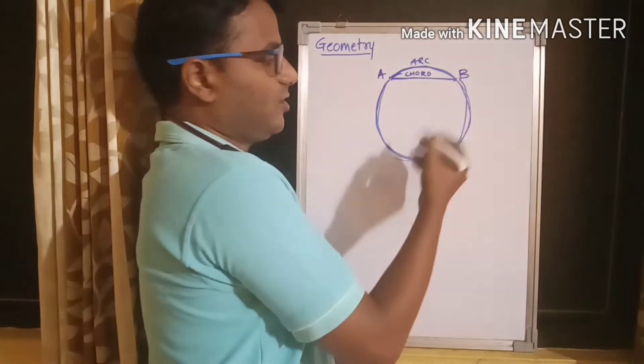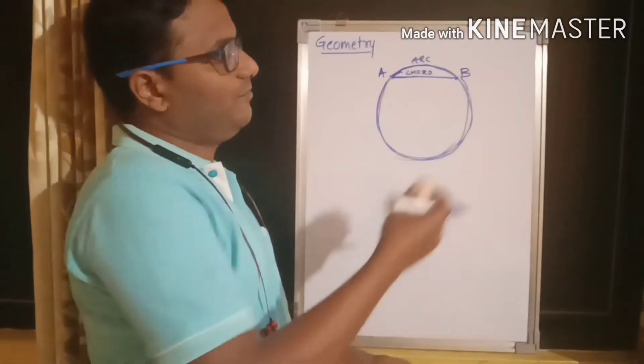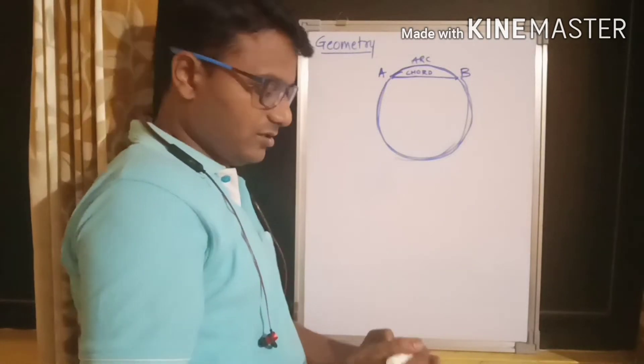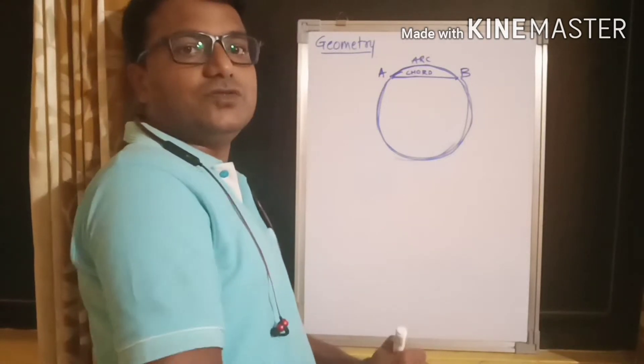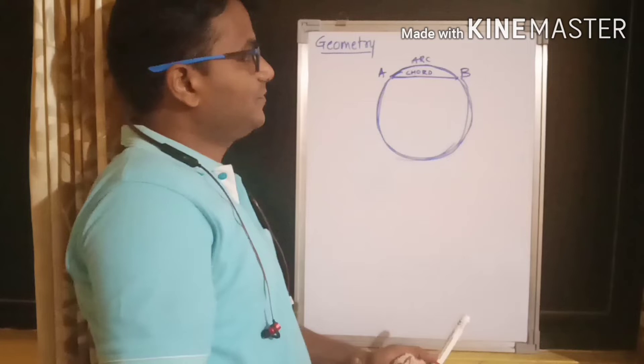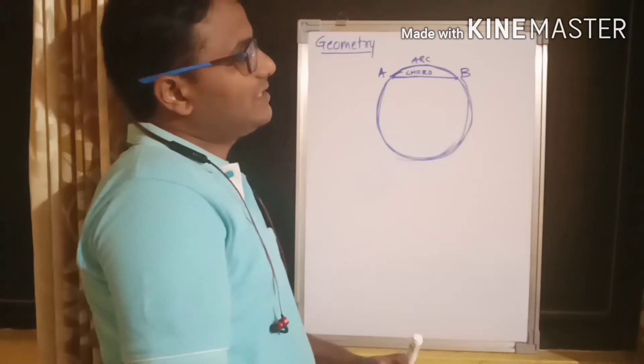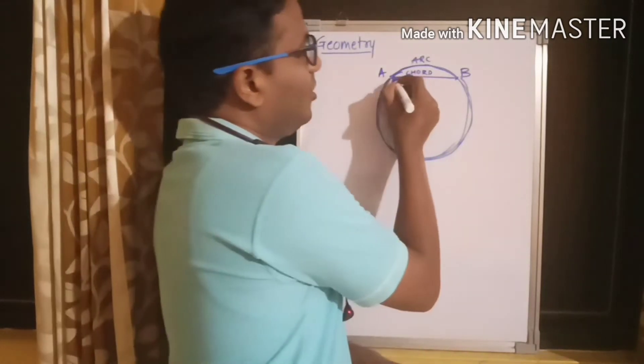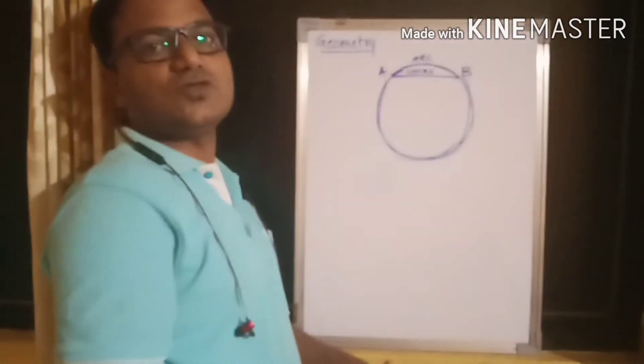But this one is quite a long, bigger arc. So, right now will not be a great idea to reach because it will take more time. So, you can see from this picture that the chord is the shortest distance between these two points.